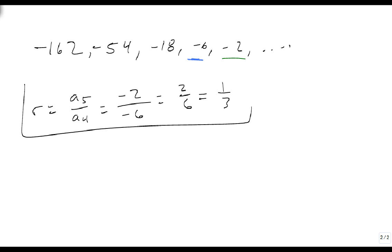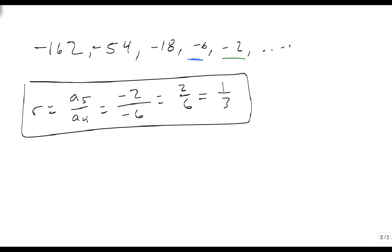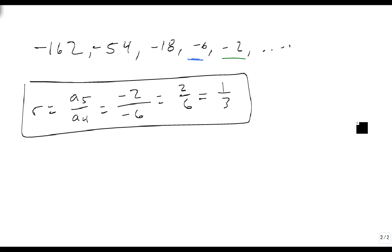So my ratio is allowed to be a fraction, and in this case it means I'm dividing by 3 each time. Notice that that holds up. If we take negative 162 divided by 3, that gives me 54. If I do it again, I get 18, 6, 2, and so on down the sequence.